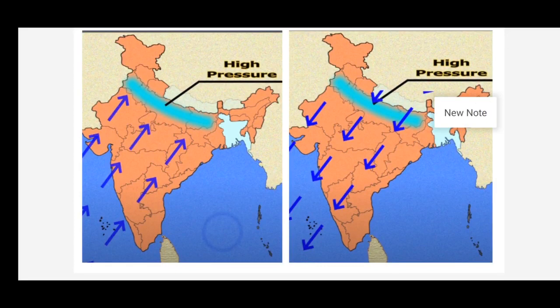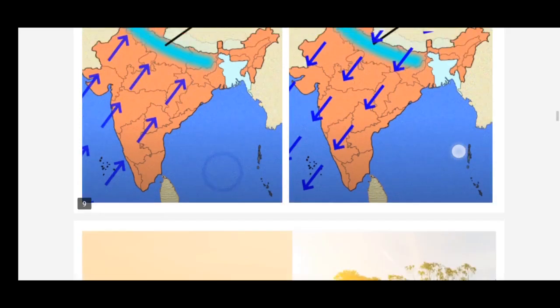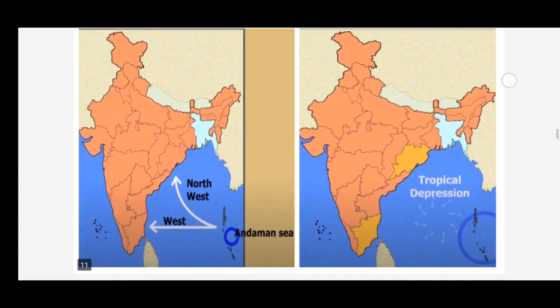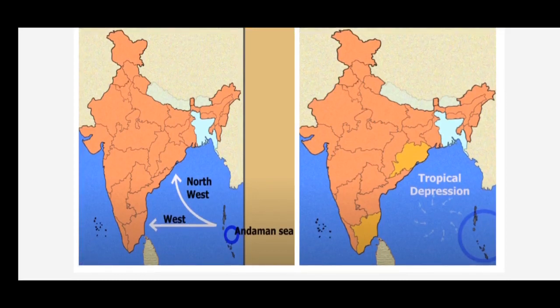In early October it is a transition period between the rainy season and the cold and dry seasons. The months of October and November are known for the retreating monsoon. The retreating monsoon is marked by clear, cloudless skies and a drop in night temperature, but the land still remains moist. The combination of high temperature and humidity gives rise to oppressive weather, commonly known as October heat.